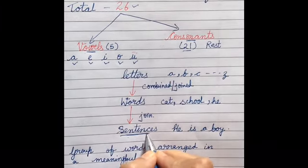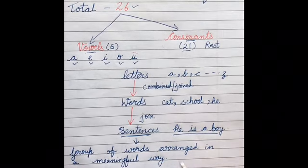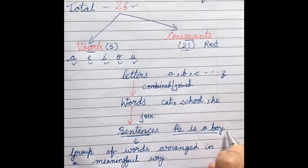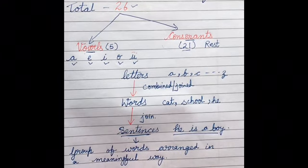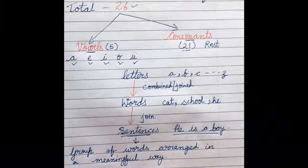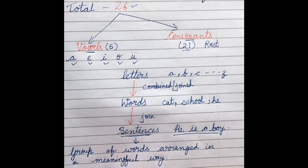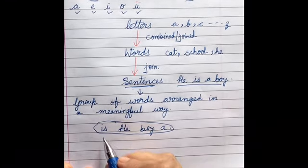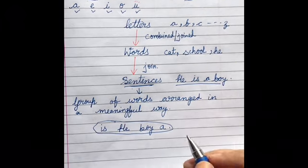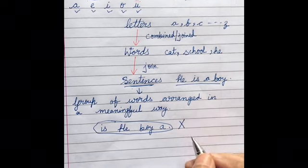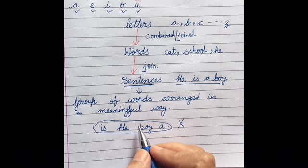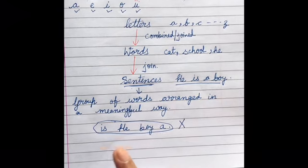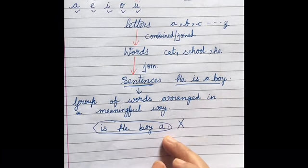Sentences are a group of words arranged in a meaningful way. If I write the same words as 'is he boy a', is it a sentence? No, it is not a sentence, because in a sentence the different words are arranged in a meaningful way, not in any random way. So there should be a particular sequence when writing different words inside a sentence.